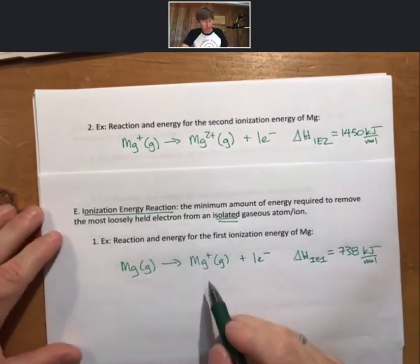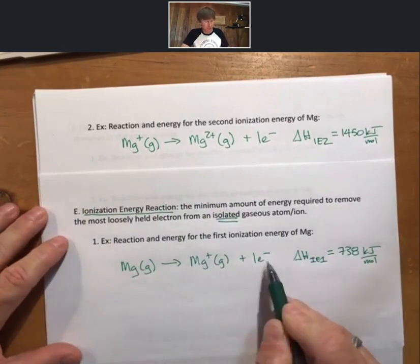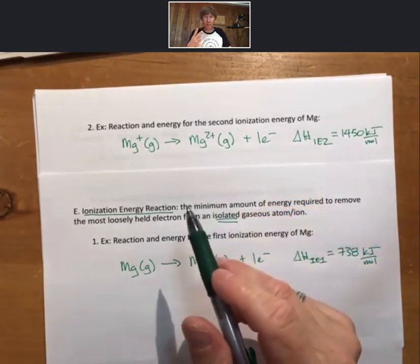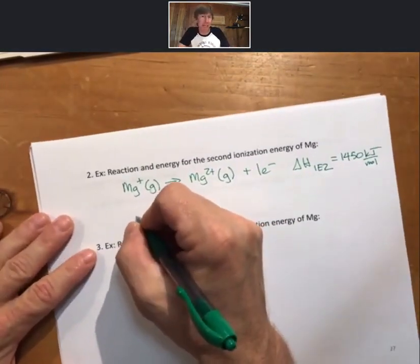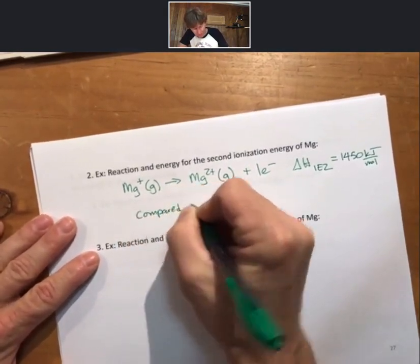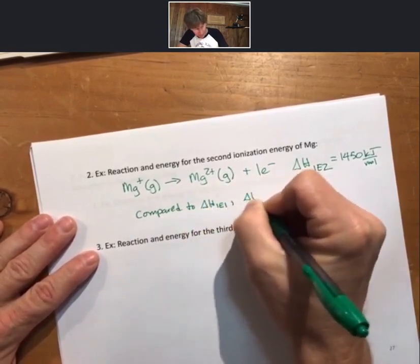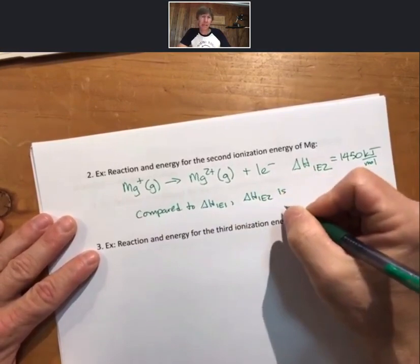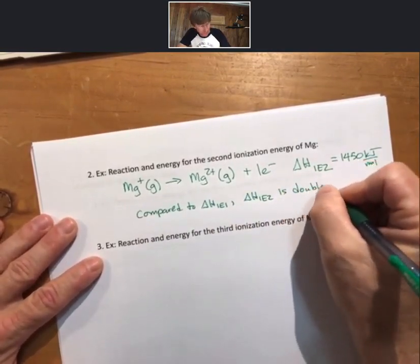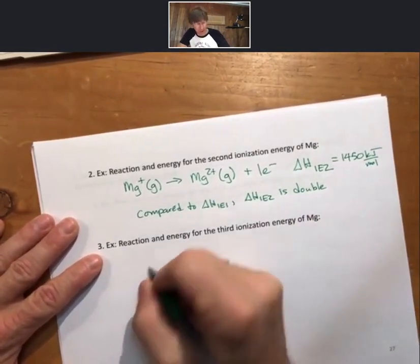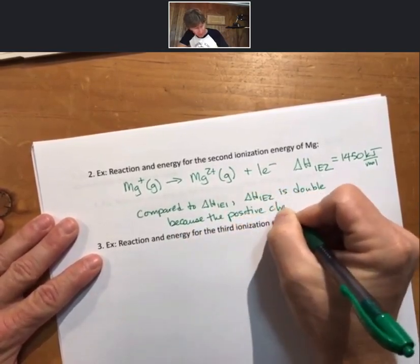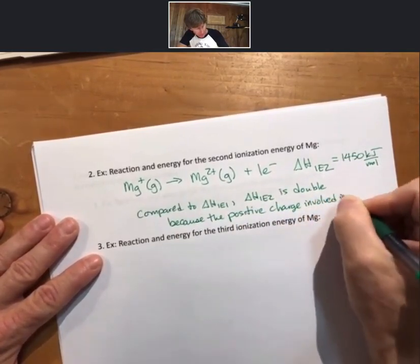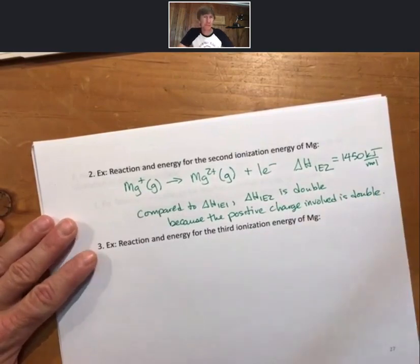And I'm going to suggest that in some ways, perhaps we can understand that, is as you go from first ionization energy, you have a plus one, minus one. So you're separating a plus one, minus one charge from each other. Here you have plus two, minus one. You have twice as much charge. It's going to take twice as much energy. So compared to IE1, or compared to delta H IE1, delta H IE2 is double. Because the positive charge involved is double.